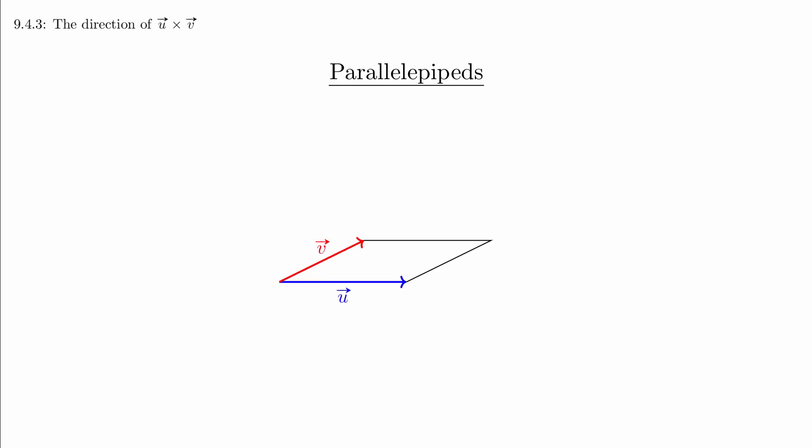With two vectors, we can form a parallelogram. Notice that this is a flat object. With a third vector, we can get a volume by branching out into a third dimension. The use of three vectors forms a parallelepiped. This is just the natural generalization of a parallelogram. It can be thought of as a box with slanted sides.